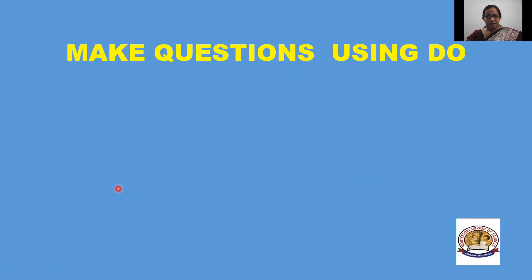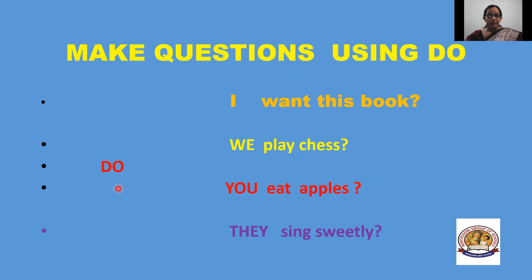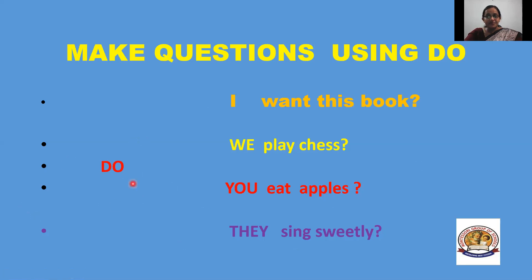Now how to make questions using do. If you want to frame an interrogative sentence, if you want to ask a question, this is the way: Do I want this book? Do we play chess? Do you eat apples? Do they sing sweetly? When you frame a question, do should be in the beginning, which itself gives a sense that it is an interrogative sentence — do I, do we, do you, do they. You cannot use does here; that would be wrong.